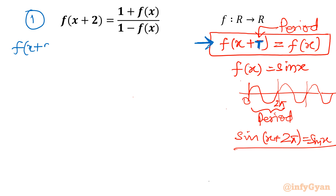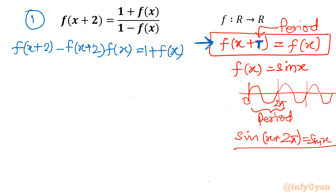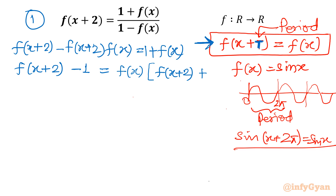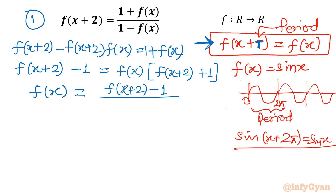I will cross-multiply the given terms to get: f(x+2) − f(x+2)·f(x) = 1 + f(x). Collecting all terms with f(x) to the right: f(x+2) − 1 = f(x) · [f(x+2) + 1]. Therefore, f(x) = [f(x+2) − 1] / [f(x+2) + 1]. Let me call this equation number 2.